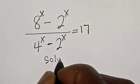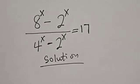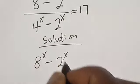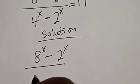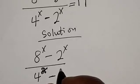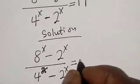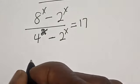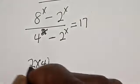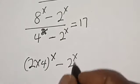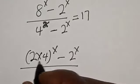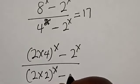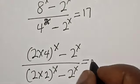Solution. 8 raised to power s minus 2 raised to power s, divided by 4 raised to power s minus 2 raised to power s, equals 70. We rewrite: 8^s as 2 multiplied by 4^s, and 4^s as 2 times 2^s, giving us 2 times 2^s minus 2^s in numerator and denominator, equal to 17.